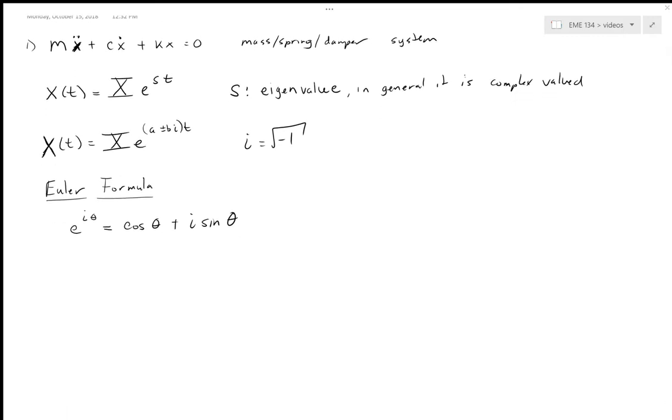So we can rewrite equation two as two new equations. Equation three: X(t) equals X1*e^((a+bi)t), and equation four: X(t) equals X2*e^((a-bi)t). So these are the two independent solutions for the two eigenvalues.